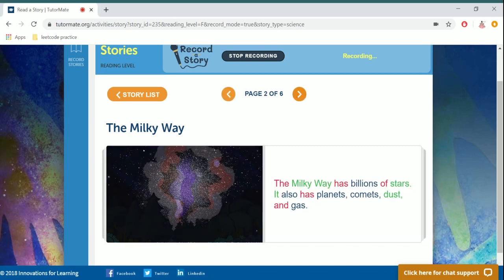The Milky Way has billions of stars. It also has planets, comets, dust, and gas.